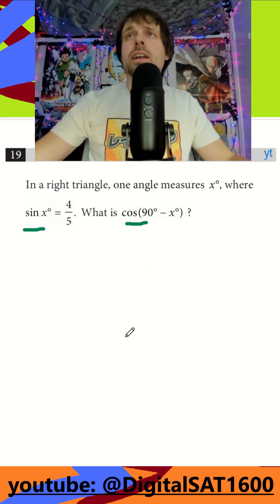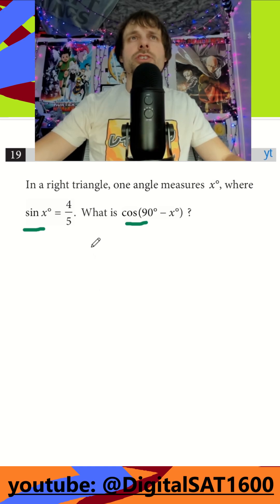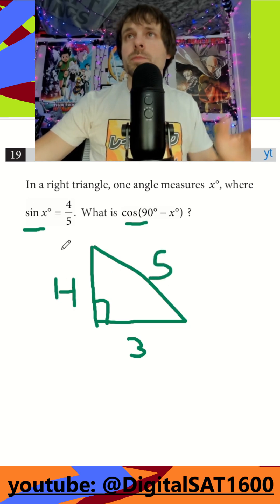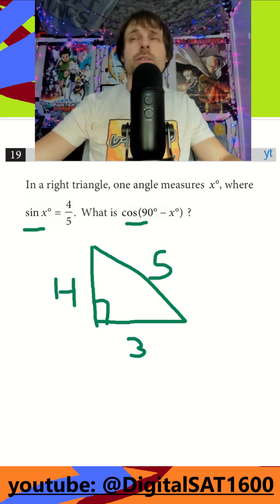So the easiest way to memorize this one, to ever bring it up if you forget it, is just draw a nice right triangle. And we'll just label the sides 3, 4, and 5. Remember, one of our special triangles. If we do Pythagorean's theorem there, it's going to work.